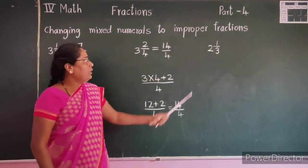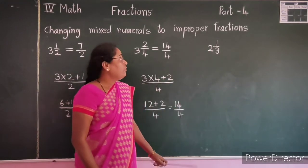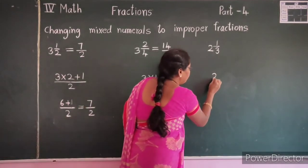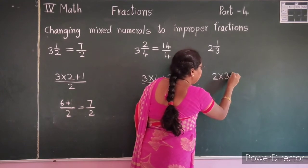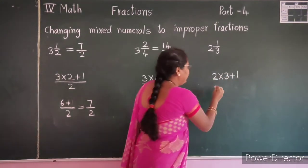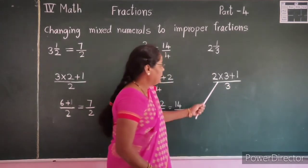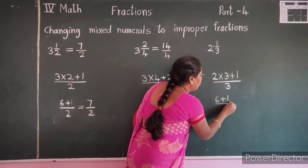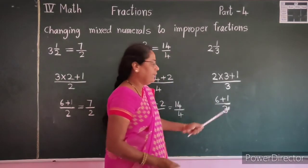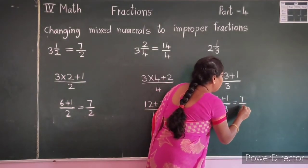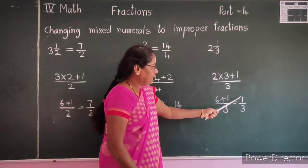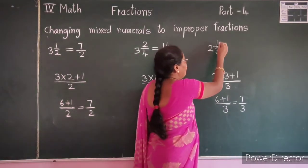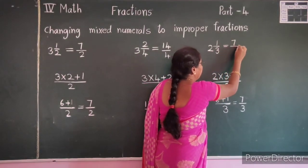Let's see one more example: 2 and 1 by 3. Multiply whole number 2 by denominator 3, plus numerator 1, and write denominator as it is. 2 times 3 is 6, plus 1 equals 7. So the answer is 7 by 3. Since 7 is greater than 3, that is an improper fraction. So 2 and 1 by 3 is equal to 7 by 3.